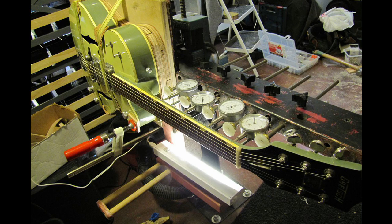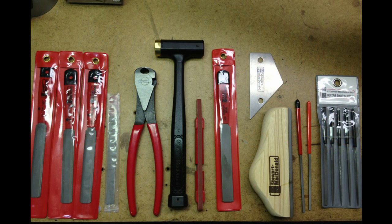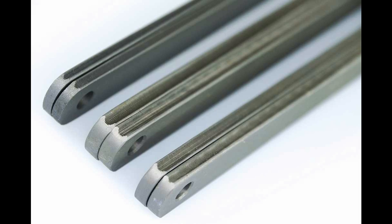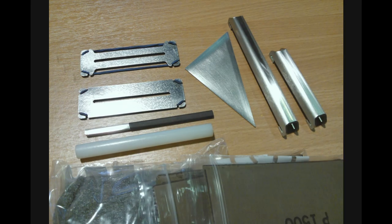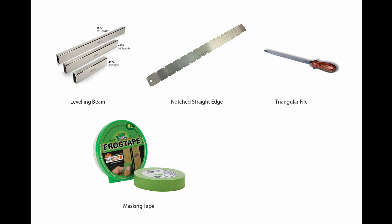There are many different ways to level the frets and a lot of different tools available for each part of the process. In this video, I'm going to show the way that I do it and try to use as few specialist tools as possible. But there are a few tools that I think are necessary: a leveling beam or anything that has a dead flat surface, a notched straight edge to check that the neck is flat before you begin, some sort of file to reshape the frets once they're level, masking tape, and a range of different grits of sandpaper. I used 220 up to 2000 grit papers in this video.